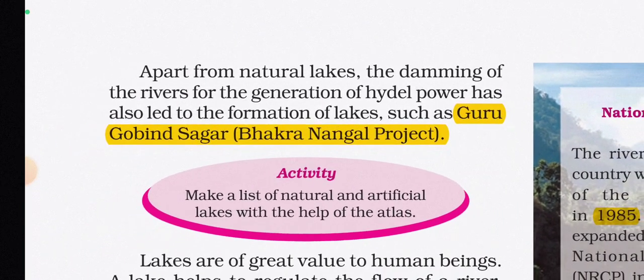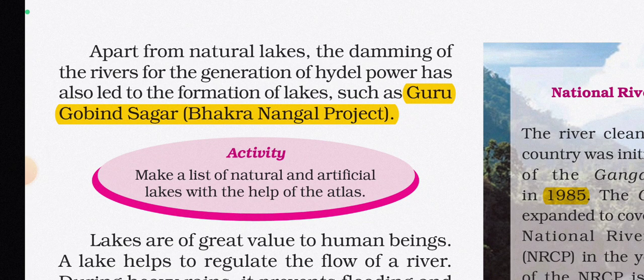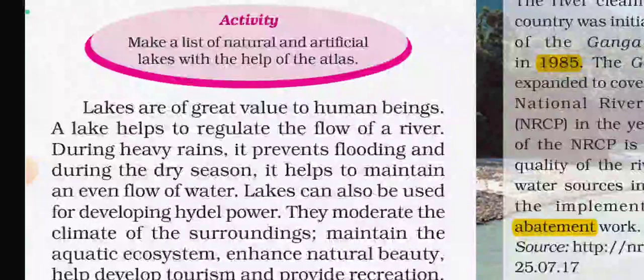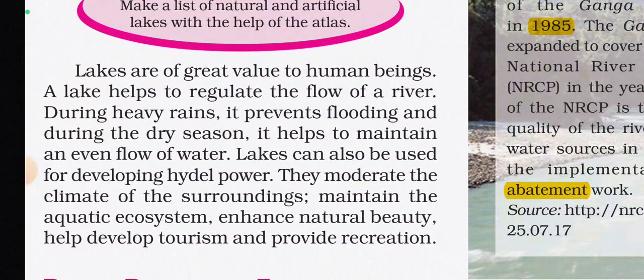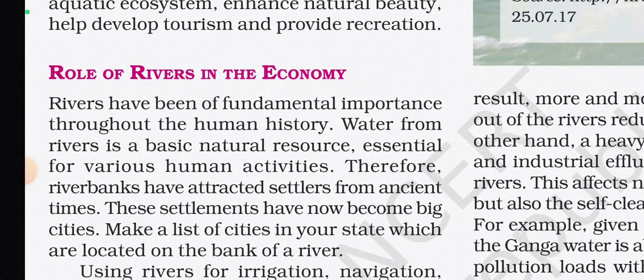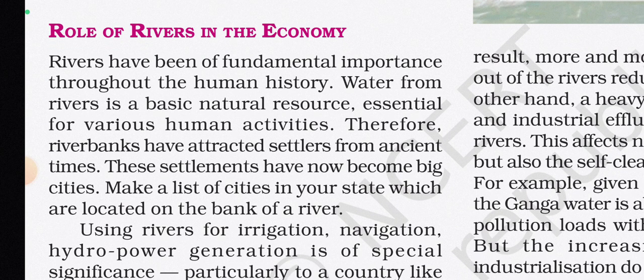Apart from natural lakes, damming of rivers for hydroelectric power has led to the formation of artificial lakes such as Gobind Sagar (Bhakra Nangal project). Lakes are of great value to human beings — they help regulate river flow, prevent flooding during heavy rains, and maintain even water flow during dry seasons. Lakes can also be used for generating hydroelectric power, moderating local climate, maintaining aquatic ecosystems, enhancing natural beauty, and developing tourism.